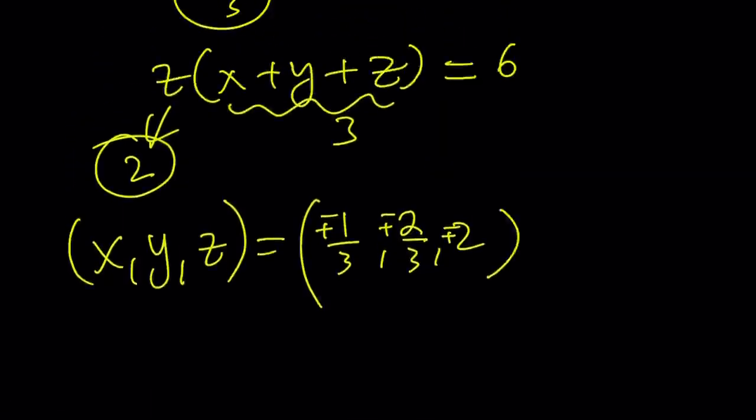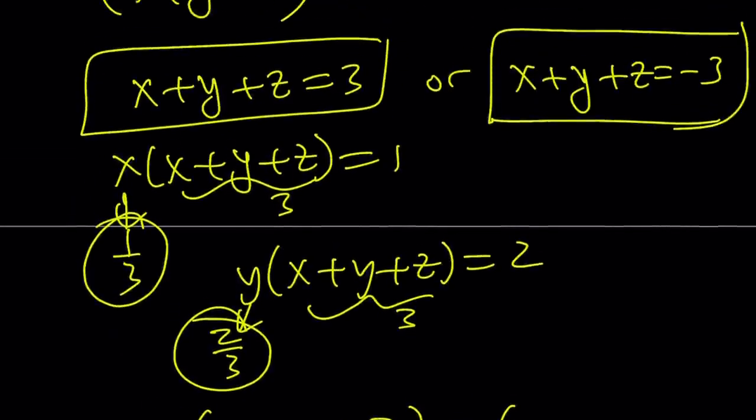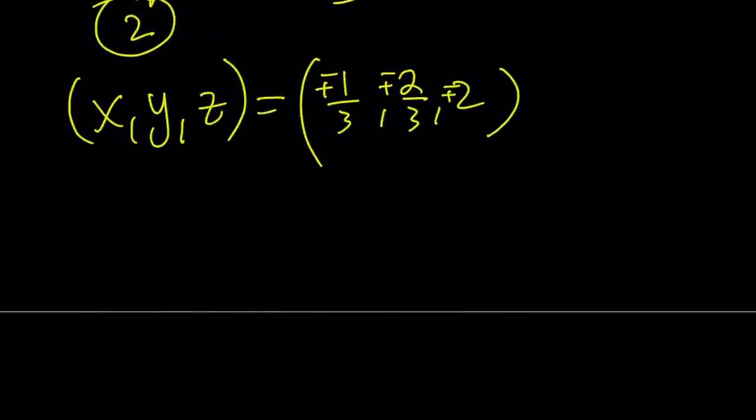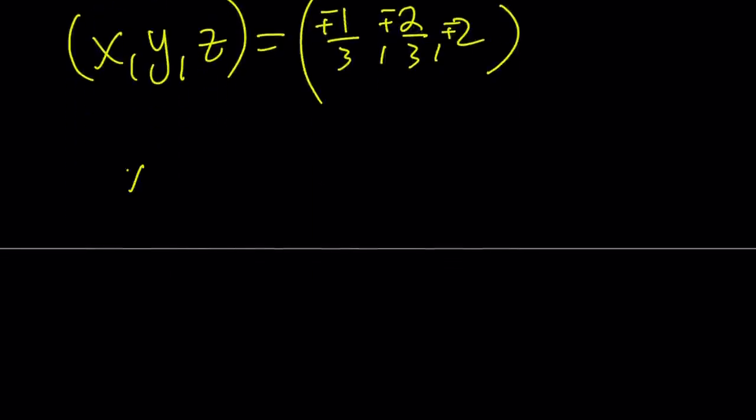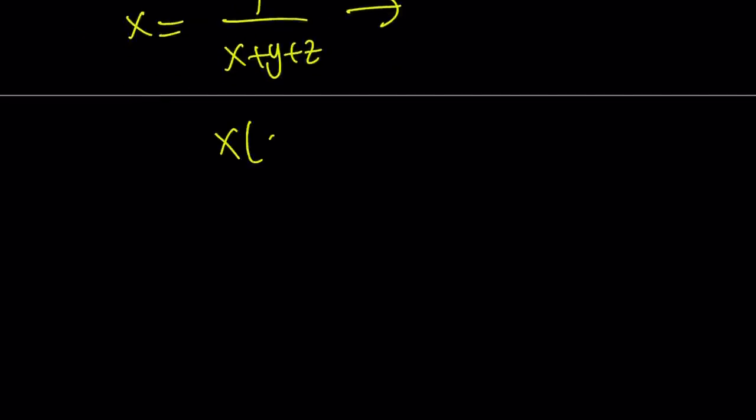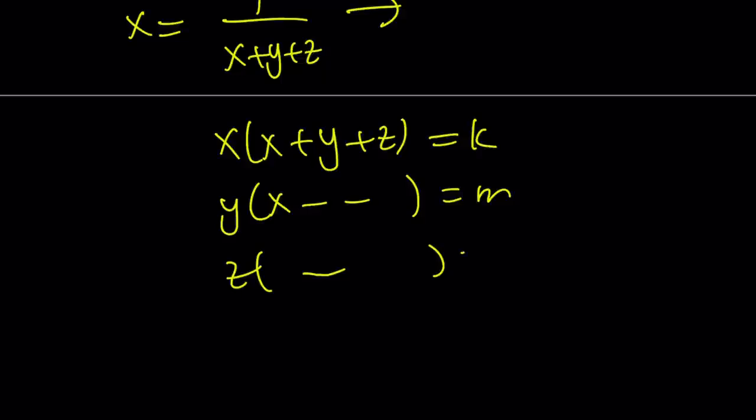Here's another approach that you can use with the second method. Notice that we can write x as 1 over x plus y plus z, because x times x plus y plus z is equal to 1. So, once you find the value of x plus y plus z, then you can find the value of x from here. By the way, you could also modify this equation and call each one of these like k, and then the second one like m, and the third one as n, and this is going to be a parametric system.